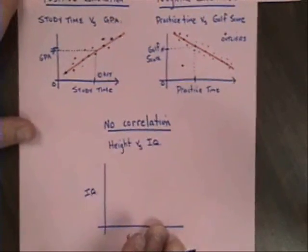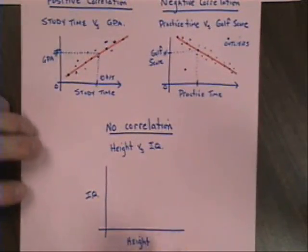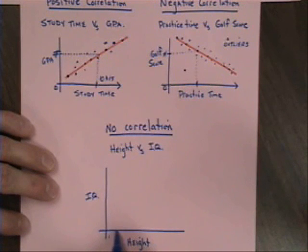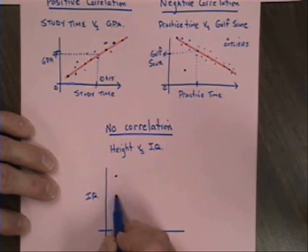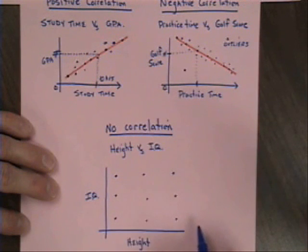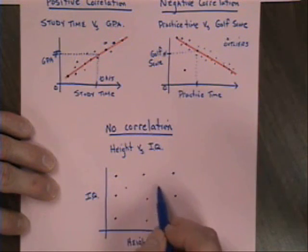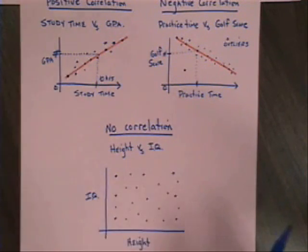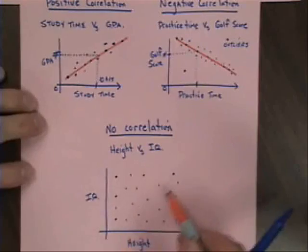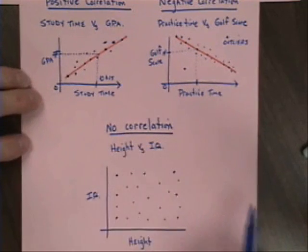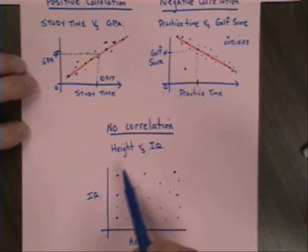Finally, let's look at the no correlation example. A no correlation might be if I compared my students' heights to their IQs. Someone that's really short could have a high, medium, or low IQ, or somebody that's really tall might have a high, medium, or low IQ, and people in the middle might have high, medium, or low IQs. There's no real way to draw a trend line — I wouldn't have any idea where it would go. So there's simply no correlation, and I cannot make a prediction based on height and IQ.